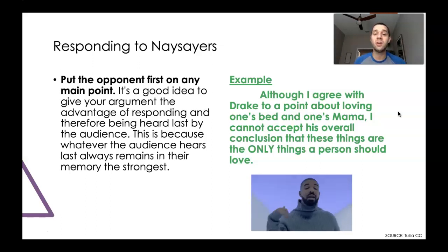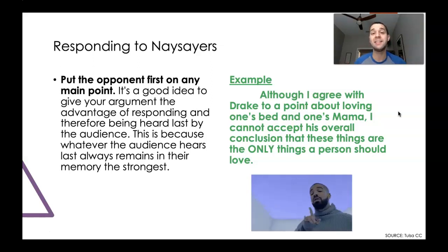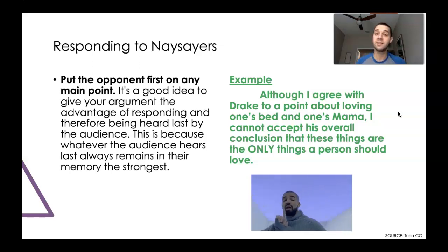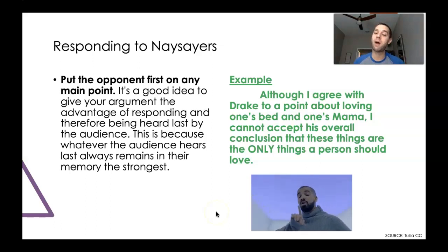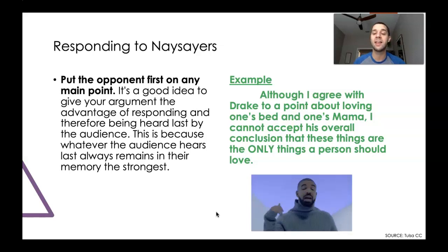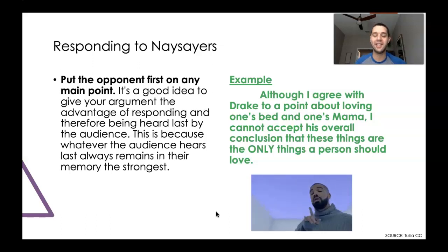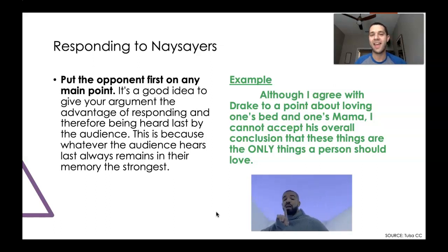In a body paragraph, introduce opposing arguments first in a topic sentence, and then come back and respond to it. Here's an example — this is the beginning of a paragraph, you can tell because it is indented: 'Although I agree with Drake to a point about loving one's bed and one's mama, I cannot accept his overall conclusion that these are the only things a person should love.' For the rest of that body paragraph, we'll be digging into Drake's assertion that you should only love your bed and your mama, and how the writer of this paper thinks that's not such a great idea.